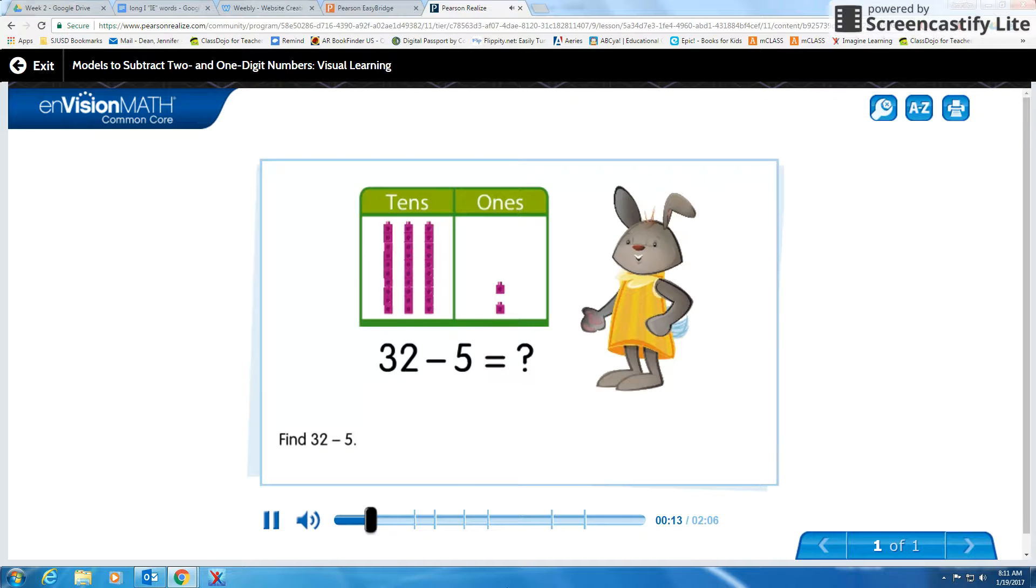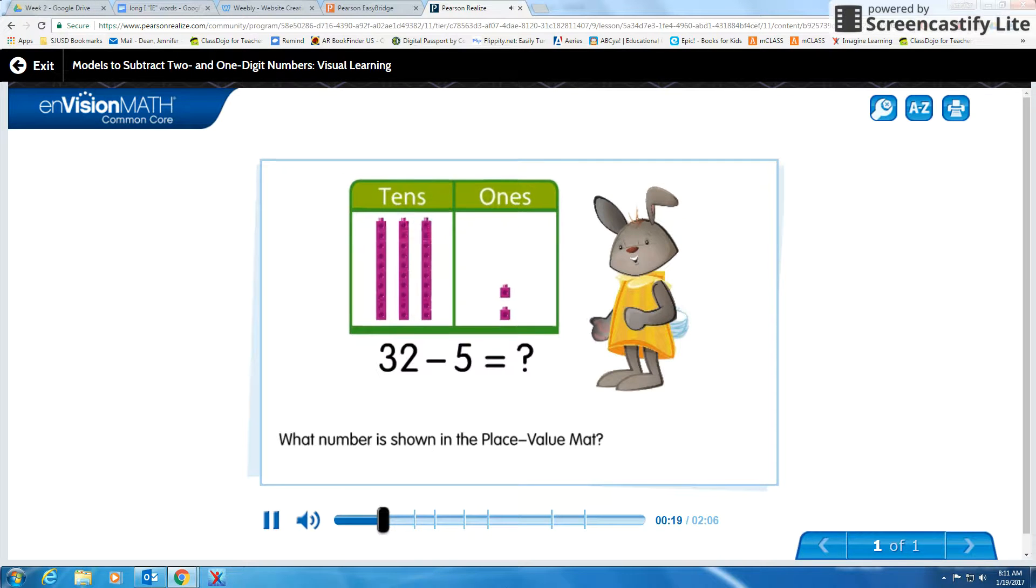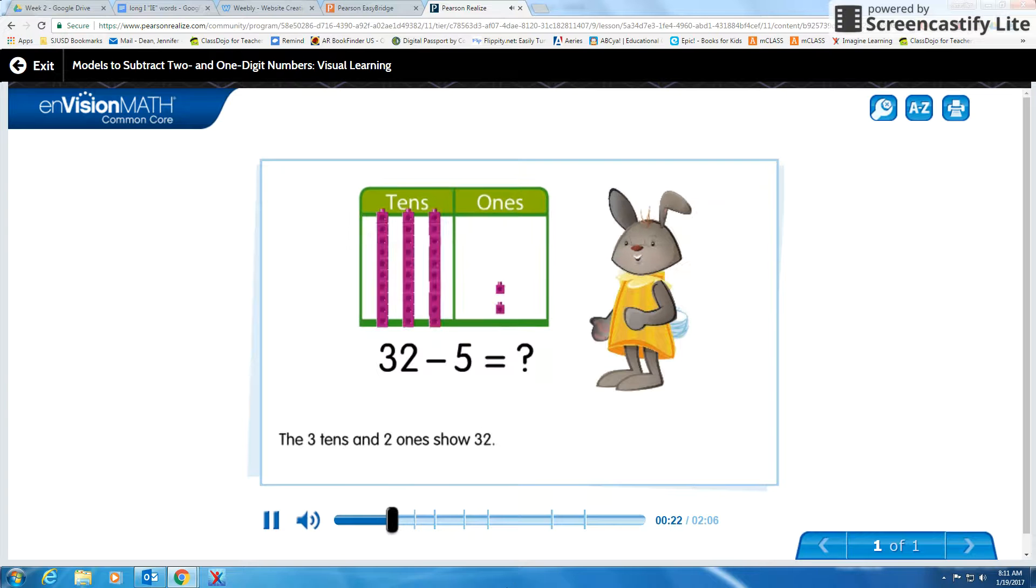Find 32 minus 5. What number is shown in the place value mat? The three tens and two ones show 32.